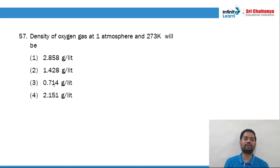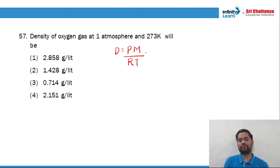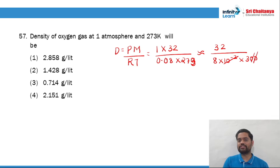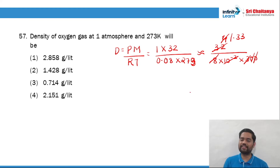Question number 57: the density of oxygen gas. Density can be calculated by pressure times molar mass, divided by R times T. Pressure is 1, molar mass is 32, R is 0.08, and temperature is 273. By applying the approximation technique — taking 300 instead of 273 — the 10⁻² and 10² cancel. We get approximately 32/24 = 1.33. So any answer near to 1.33 is correct, and option 2 is the right answer.